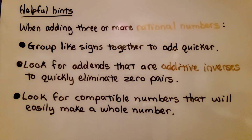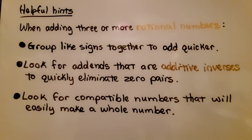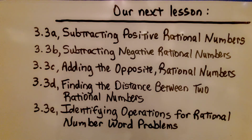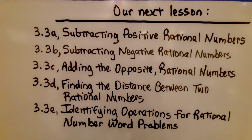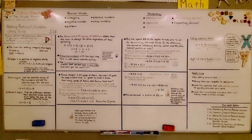Here are our helpful hints: when adding three or more rational numbers, group like signs together to add quicker; look for addends that are additive inverses to quickly eliminate zero pairs; and look for compatible numbers that will easily make a whole number. We're now finished with lesson 3.2 and moving on to 3.3, which covers subtracting positive rational numbers. Try using those three helpful hints as you do your work. Have a great day, and I hope you join me for the next lesson!